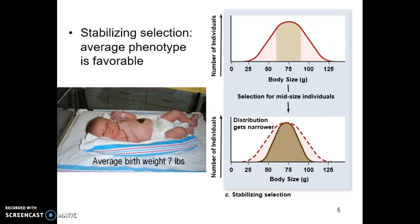What would be fascinating is to come back in about 15,000 years, if humans are still around, and look at the average birth weight. All the medical intervention — C-sections, premature babies surviving — will contribute to changing the selection. We're actually moving away from natural selection when we use medical intervention, and it will change our distribution, but it will take tens of thousands of generations before we see that change significantly.